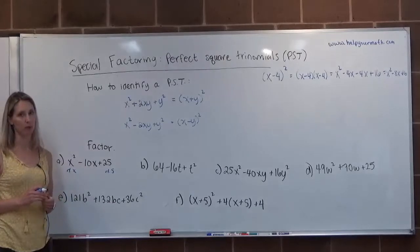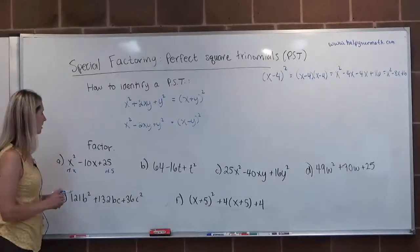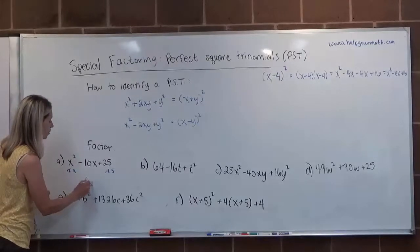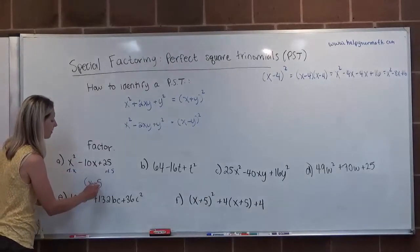It's minus, so that indicates to us that our perfect square, that the binomial will have subtraction in it. It does work. So the system works. That means that this will factor into x minus 5 quantity squared.